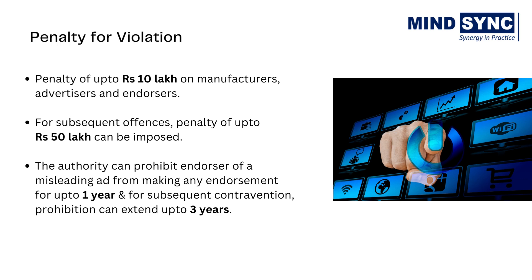Any violator who fails to disclose any material connections, or who fails to comply with the Consumer Protection Act 2019 and its rules, will be liable for strict action under the law. There is no specific mention of a penalty for violating the guidelines themselves; the penalty prescribed for misleading advertisements under the Consumer Protection Act 2019 will be applicable. The CCPA can impose a penalty of up to Rs 10 lakh on manufacturers, advertisers, and endorsers for any misleading advertisements. For repeated offences, a penalty of up to Rs 50 lakh can be imposed. In addition, CCPA can prohibit the endorser of a misleading advertisement from making any endorsement for up to 1 year, and for subsequent contraventions, the prohibition can extend up to 3 years.